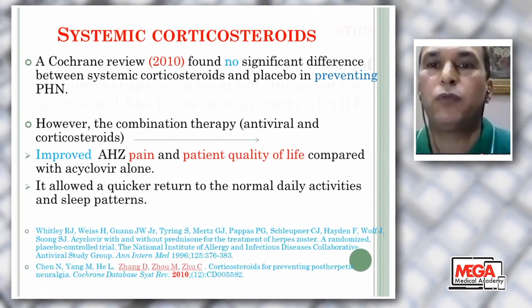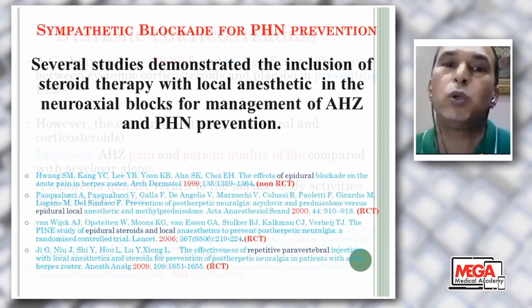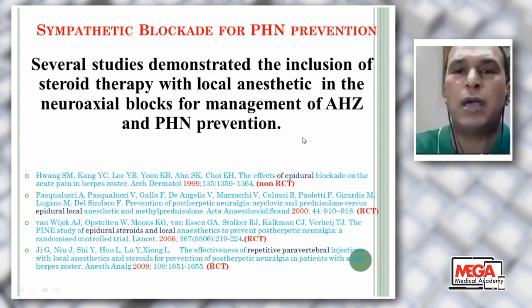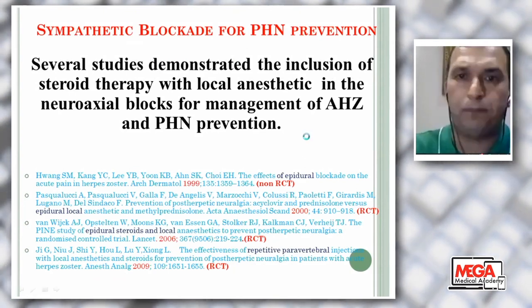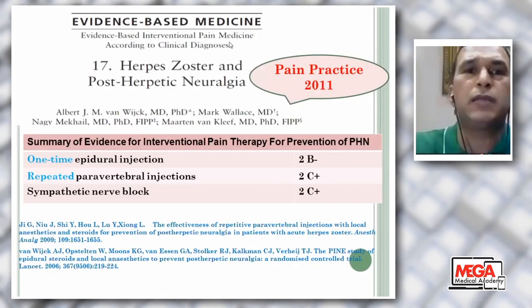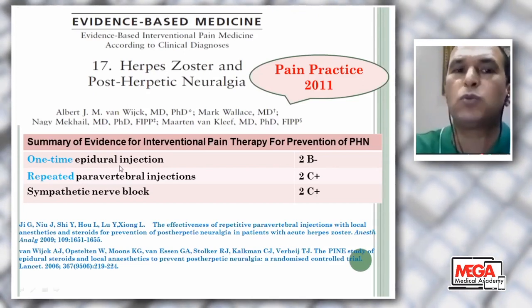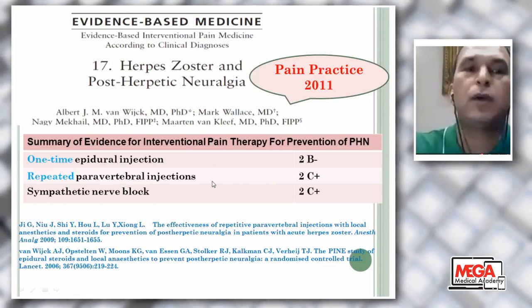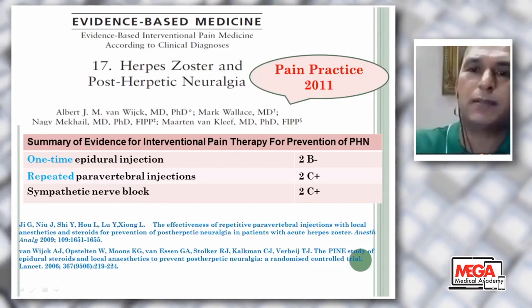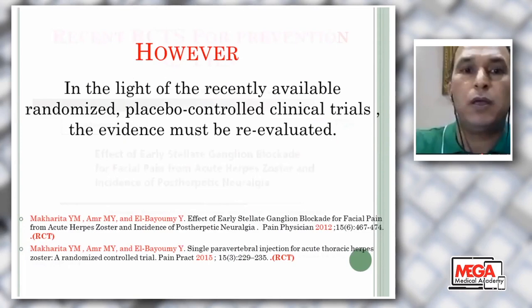What about sympathetic blockade for prevention of post-herpetic neuralgia? Several studies demonstrated inclusion of steroids with local anesthetic in neuroaxial blockade for management of acute herpes zoster and post-herpetic neuralgia prevention. There are four studies, three of which are randomized clinical trials and one non-randomized. By 2011, evidence showed: one-time epidural injection — negative, no effect; repeated paravertebral and sympathetic nerve block — positive. However, in light of recently available randomized placebo-controlled clinical trials, the evidence must be reviewed.